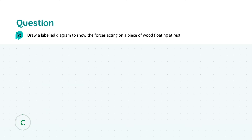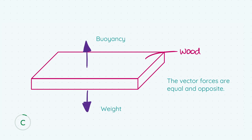Moving to part C, we're asked to draw a labeled diagram — it's super important not to forget the labels, because most of the marks go for those labels. You're asked to show the forces acting on a piece of wood floating at rest. Picture a piece of driftwood just floating in the middle of a body of water. I'll draw in some squiggly lines on either side to show this block of wood floating in the water.